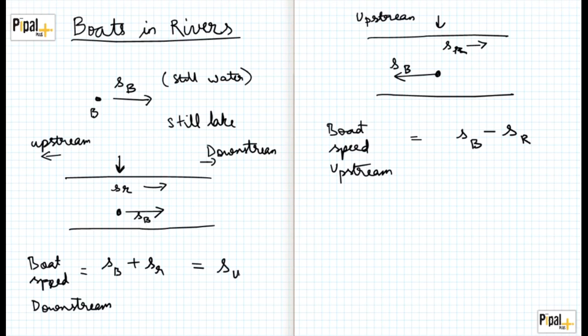Now if we call this as the speed downstream and this as the speed upstream, then the relationship between the speed downstream and the speed upstream is: if we add the first and the second situations, we get two times the speed of the boat. SR and negative SR cancel each other.